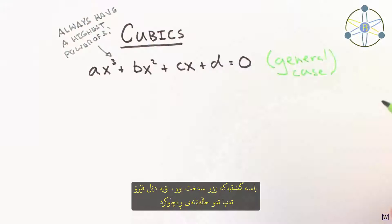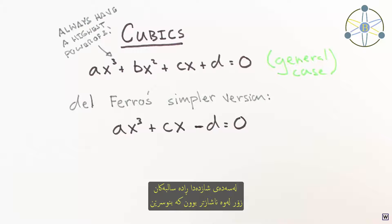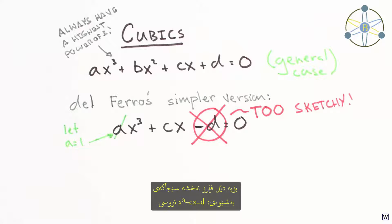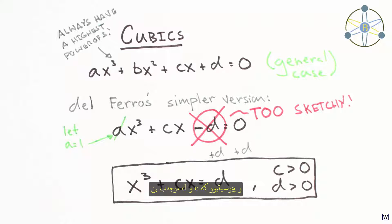The general case is pretty tough, so Delferro first considered the case where the x squared term is missing, and the last term is negative. In the 16th century, negative terms were way too sketchy to write, so Delferro wrote his cubic as x cubed plus cx is equal to d, and required c and d to be positive.